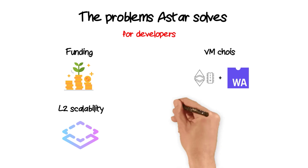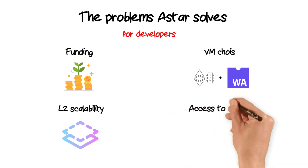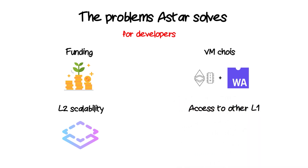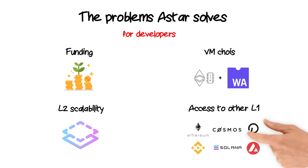Astar will connect the main L1 networks — such as Ethereum, Cosmos, Binance Smart Chain, Solana, Avalanche, and others — through bridges. This will permit developers to build cross-chain applications and interact with other blockchains almost seamlessly.